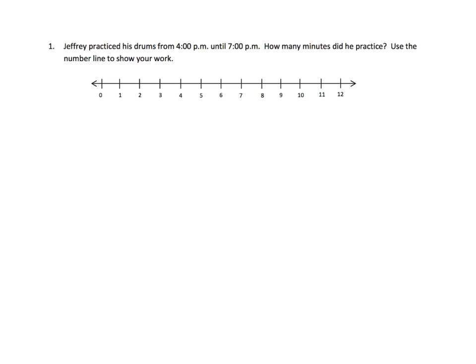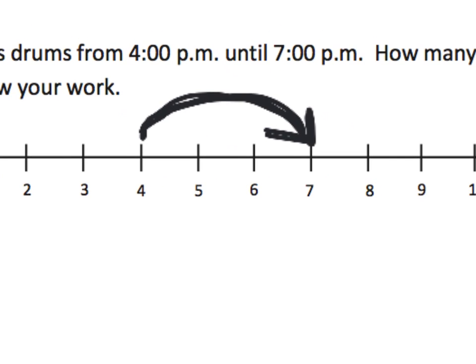So what we've got here is good old Jeffrey, and Jeffrey is practicing his drums from 4 p.m. to 7 p.m. So the way I'm going to interpret this number line is from 4 p.m. to 7 p.m. — he went from 4 to 7. So that's him practicing his drums. Boy, he was practicing a lot. And so we can see, if I wanted to zoom in, we can see that he practiced for three hours.